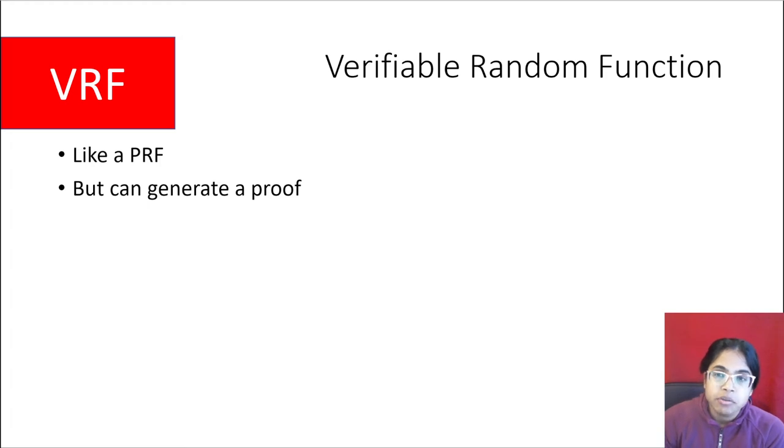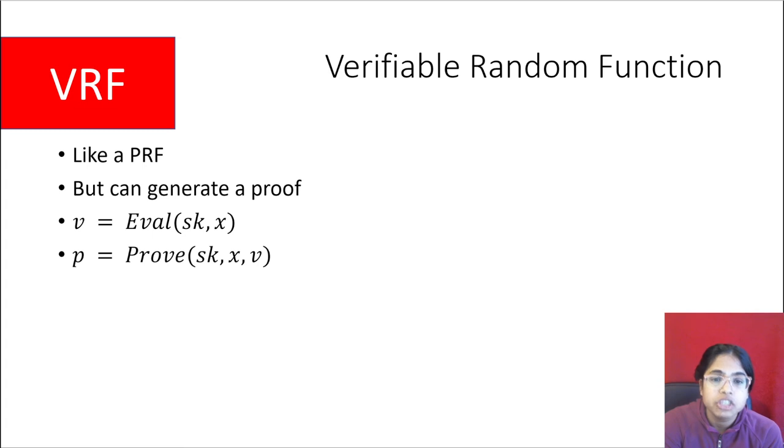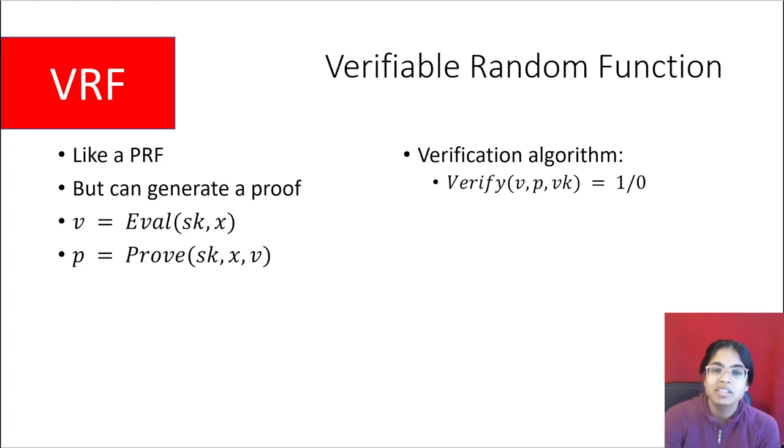Let's explain each building block. I'll start with verifiable random function. A verifiable random function is like a pseudo-random function, but you can generate a proof. A pseudo-random function produces an output that's pseudo-random, which means that nobody can tell whether that output is truly random or it really came from this PRF. A VRF has the same thing, but there's an additional proof that the owner of the secret key can use to prove that that value really did come from the VRF. Like a PRF, there's a secret key, but there's also now a public verification key that anyone can use with the value and proof to believe that it really did come from that VRF. The point I want to get across here is that there is public verifiability of a function that produces random looking outputs.